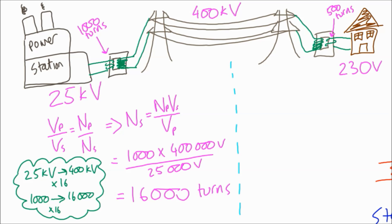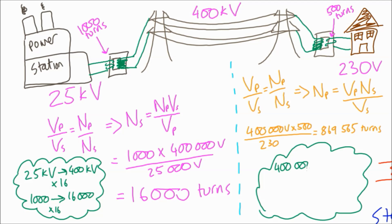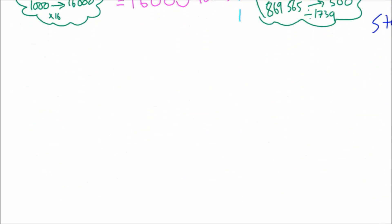We do a similar thing with the transformer for the house. Rearranging to get number of turns on the primary... The numbers are slightly less nice in this, but we plug in the numbers and we get 869,565 turns. But again, we could have just looked at the change in voltage. It becomes 1,739 times less. So we could just look at the ratios, and you can always just use ratios with transformer questions. It's a good way to check to see if you've got things right or not.